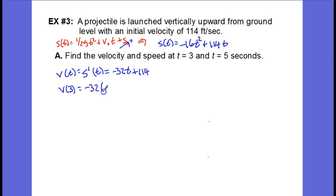So now we can find v of 3, and that's going to be negative 32 times 3 plus 114, and this works out to be 18 feet per second.